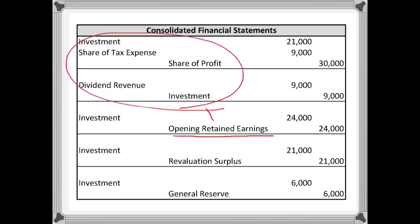These current year entries would end up netting out and having an effect on retained earnings going forward. But because we're interested in the cumulative effect of all the profits the associate has made on the investment, we can't ignore the prior year profits. So we need to show how retained earnings has changed from when significant influence was taken in this company to the start of this financial year, and then the first two entries will pick up the effect during the financial year.